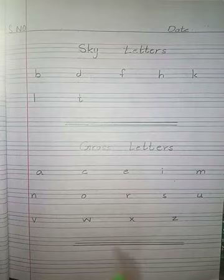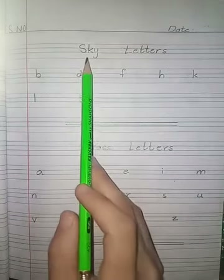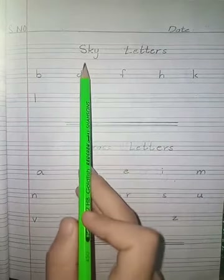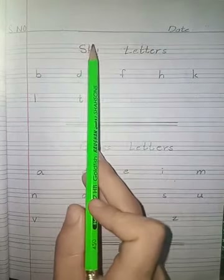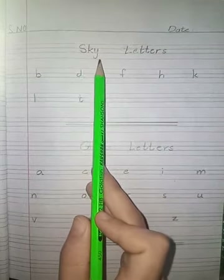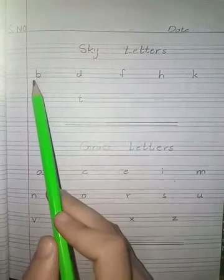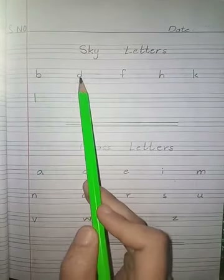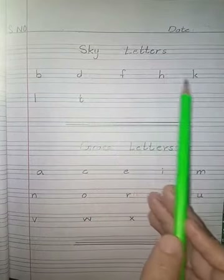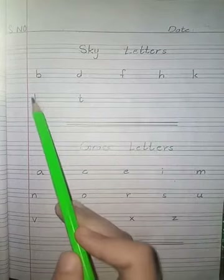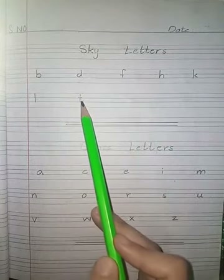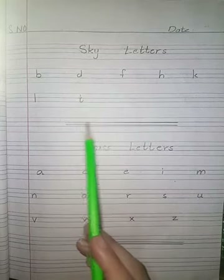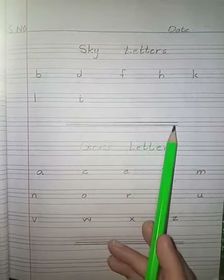Then come to the next page and write sky letters. Sky letters are those letters which we write in the first three lines — for example: b, d, f, h, k, l, t. After writing sky letters, draw a finishing line.